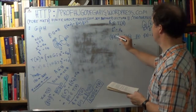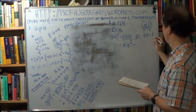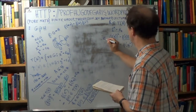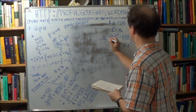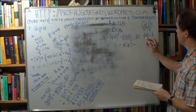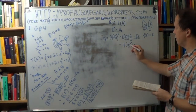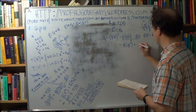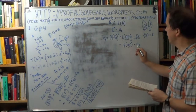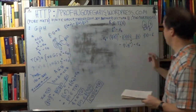Now, F of g is h. So h to the n is e — the unit of H. And h is F of g, so F of g to the n equals e, the unit of big H.